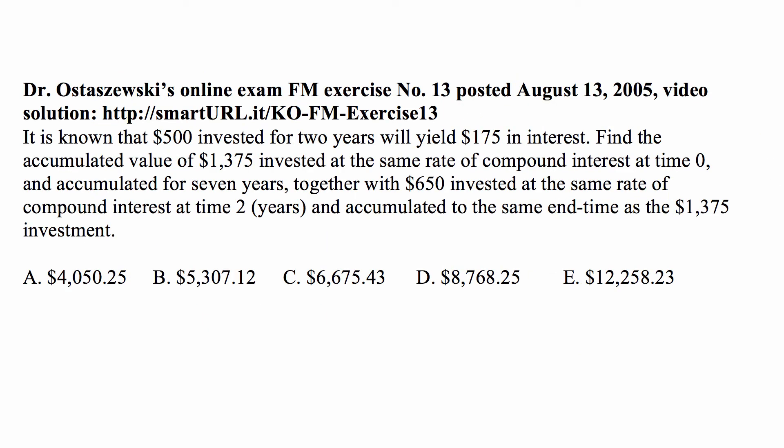Here's the problem for today for Exam FM on financial mathematics. It is known that $500 invested for two years will yield $175 in interest. Find the accumulated value of $1,375 invested at the same rate of compound interest at time zero and accumulated for seven years, together with $650 invested at the same rate of compound interest at time two years and accumulated to the same end time as the $1,375 investment.